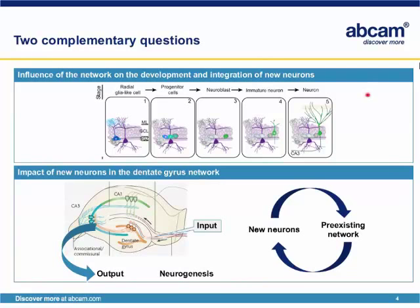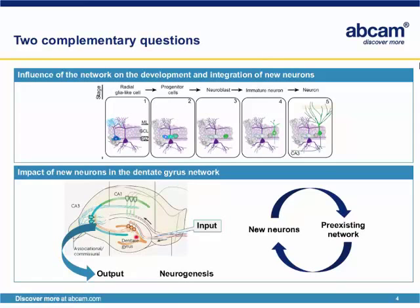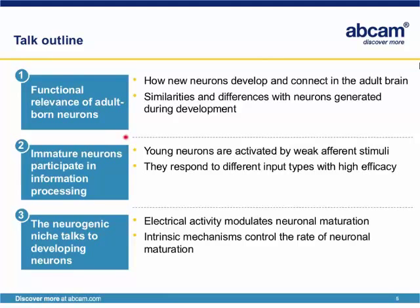In the lab we are trying to address two complementary questions regarding adult neurogenesis. The first is how the network — the neurons surrounding the neural progenitor cells — influences the development and integration of new neurons. What is the importance of the niche where these neurons are developing in determining the properties involved in their development and circuit integration? The second question is, once these neurons are integrated in the dentate gyrus, how do they impact the input-output properties of the dentate gyrus, what changes do they impose on the circuitry, and how do they change the output for a given input?